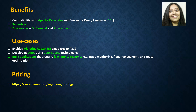Benefits are pretty clear. It is compatible with Apache Cassandra, so you can easily migrate Cassandra workloads to Keyspaces and continue to use your CQL language. It is serverless, scalable, highly available, and managed — no patching, no disk concerns. It also allows you to change throughput mode, so you can start with on-demand and switch to provisioned once you have a good capacity estimate.